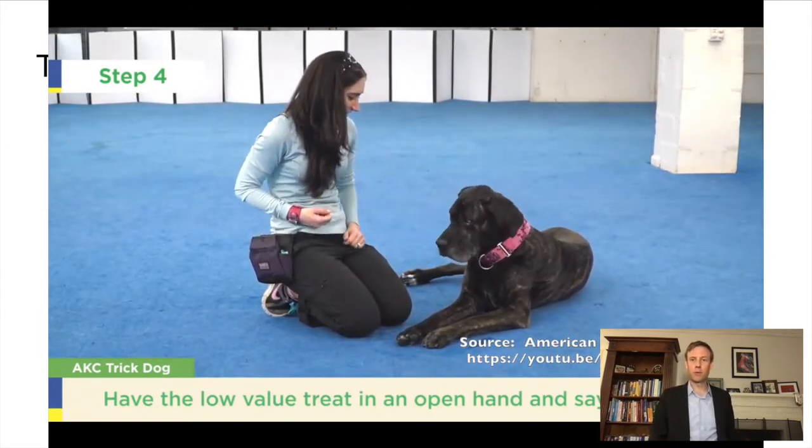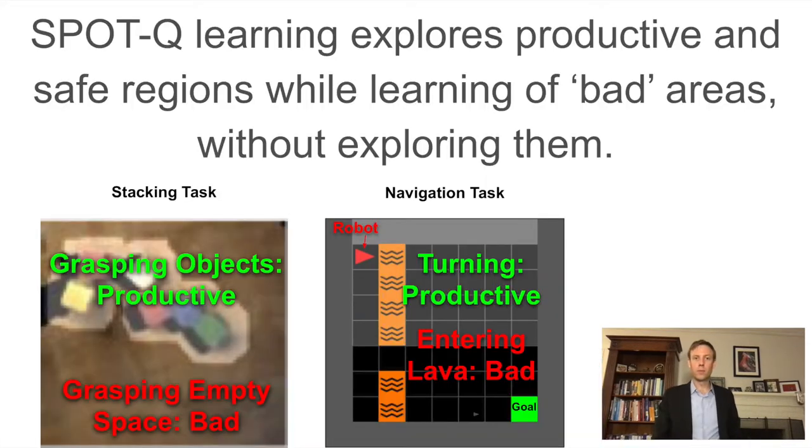This is the principle which we're deploying in our algorithms. We allow exploration of the environment and provide zero reward when we know in advance that an action will not be productive. For example, in the stacking task, we know that grasping objects will be productive and grasping empty space will be unproductive. This is also true for a broad range of other practical tasks. Take a look at the navigation task. Here we know that turning might be productive depending on the direction, but we're very sure entering the lava is critically unsafe behavior.